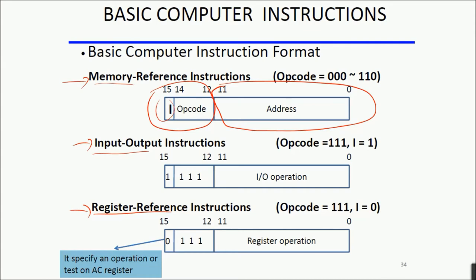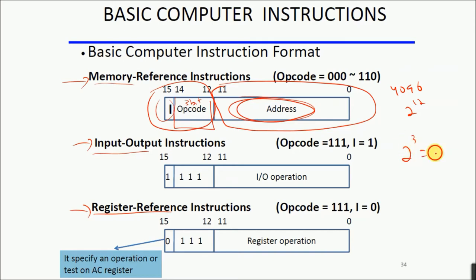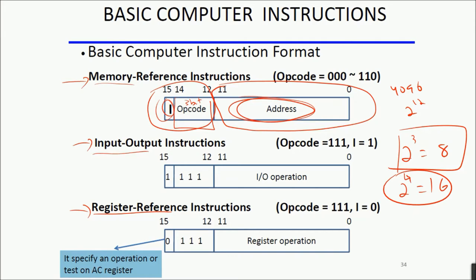A 3-bit opcode can have a maximum of 8 combinations. Does that mean we are limited to only 8 instructions? No — we already said we are going to have 25 instructions. Even if we include a fourth bit, 2 raised to the power 4 is 16, which is still less than 25. The opcode defines the operation: add, subtract, increment, move, clear, decrement, etc. So how do we achieve 25 instructions? We'll see that.